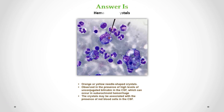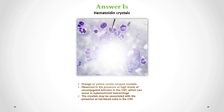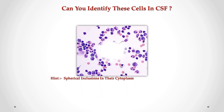Correct answer is hematoidin crystals. We can see orange or yellow needle-shaped crystals, observed in the presence of high levels of unconjugated bilirubin in the CSF, which can occur in subarachnoid hemorrhage. The crystals may be associated with the presence of red blood cells in the CSF.